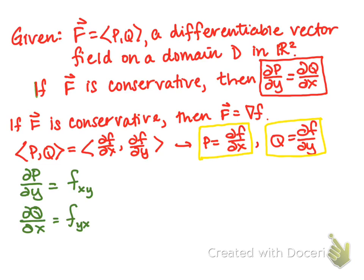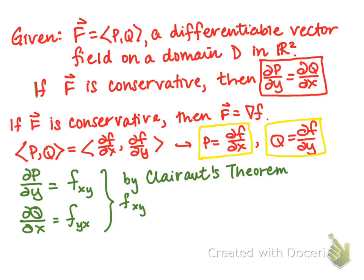Since F is a real-valued function on domain D in R² and the second-order mixed partial derivatives exist and are continuous on D, by Clairaut's theorem F_xy must equal F_yx, and therefore partial P partial y equals partial Q partial x.